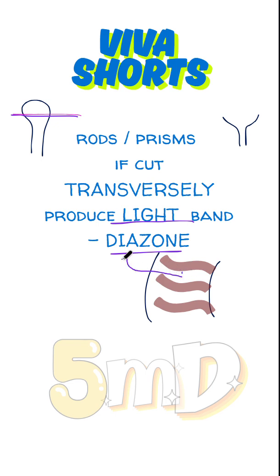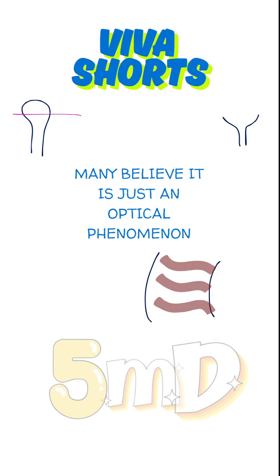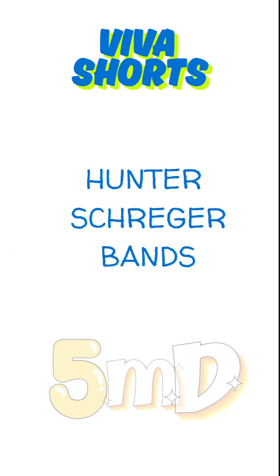Depending on the change in direction of enamel rods, you get alternating parazones and diazones. This change in direction is useful as a functional adaptation of enamel. Some suggest that these dark and light zones differ in permeability and other physical properties, while others suggest it is purely an optical phenomenon, which is the more widely accepted view.